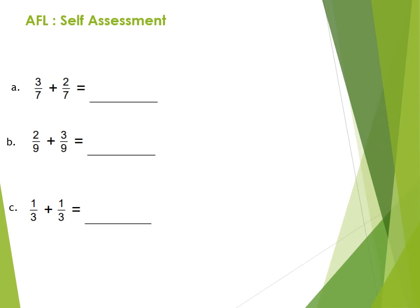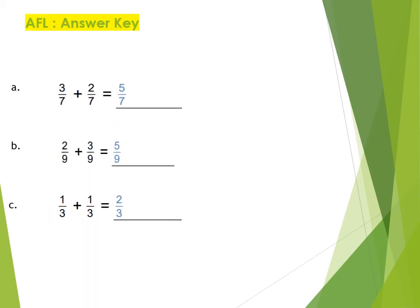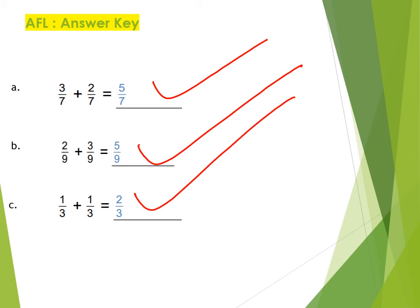Now, self-assessment. Read each question and remember the points to keep in mind when adding like fractions: make sure the fractions are like fractions, and add only the numerators. Do it yourself. The answer key is given — if your answers are correct, use your color pencil to put a tick for self-assessment.